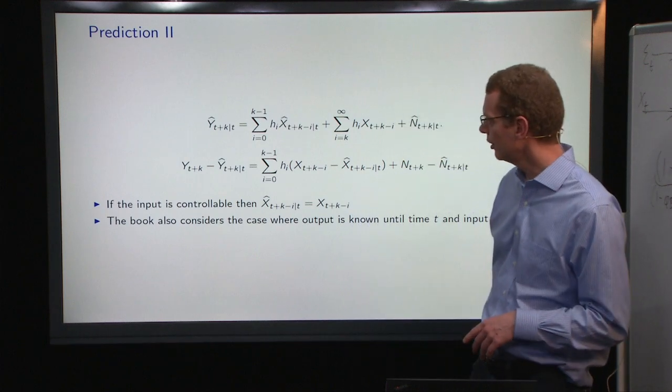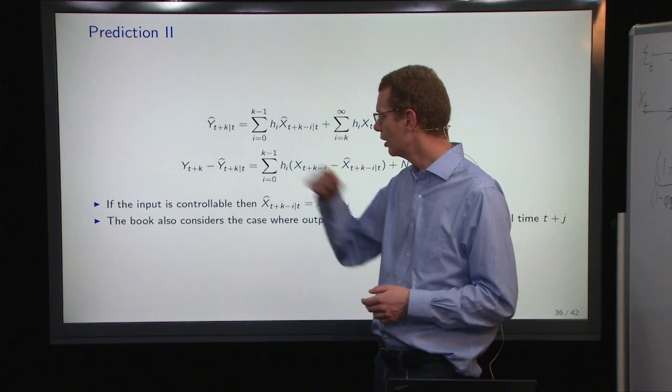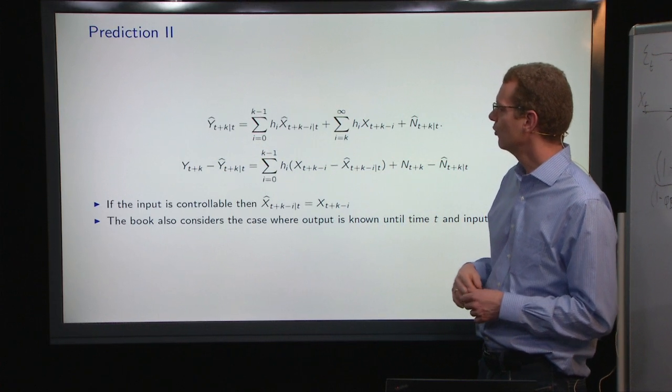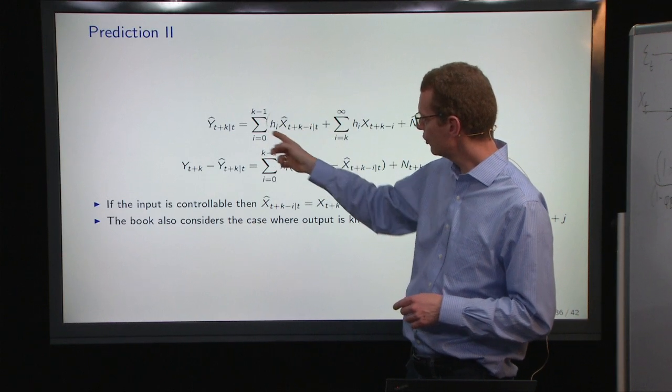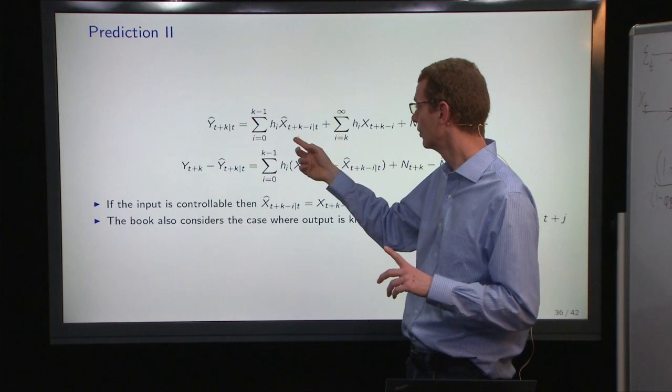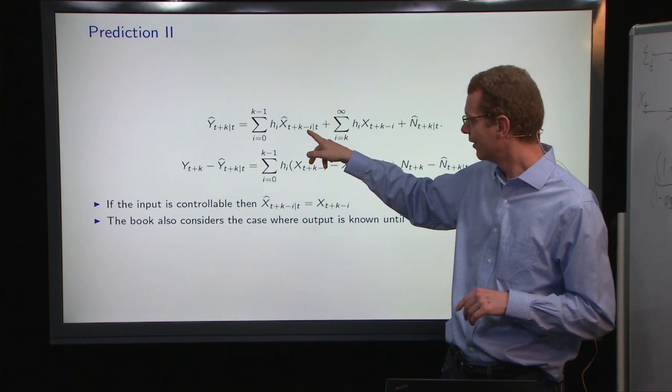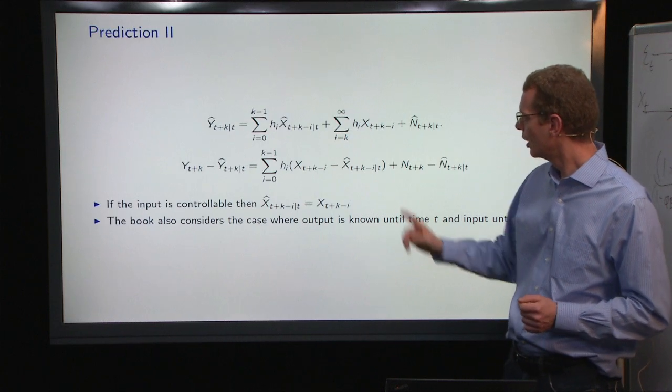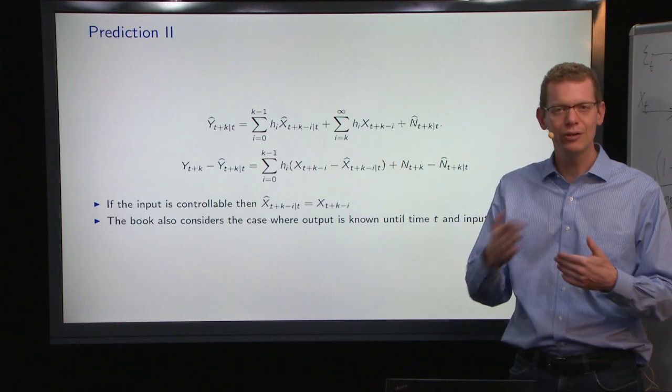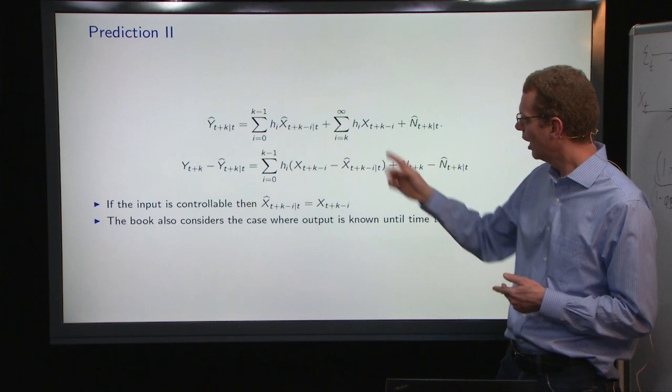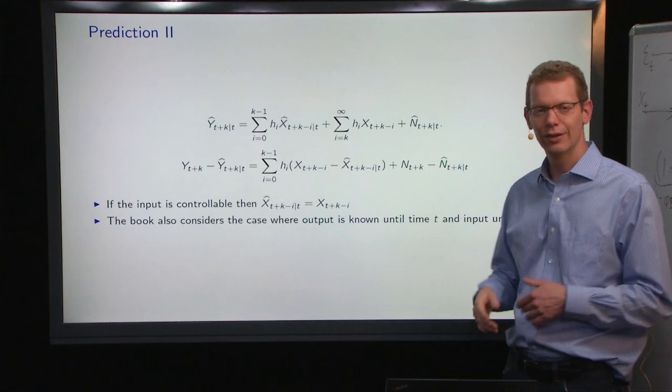So, here is the general case where you don't know things. To make a K-step prediction, then what you have, you have a dependence on the future inputs that you may know or may not know. So, X hat of T plus K minus I can either be known or unknown. And then you have a part that depends on the previous input at time T. And those that you do know. And then you have the noise that you also estimate.